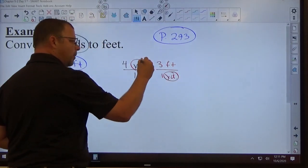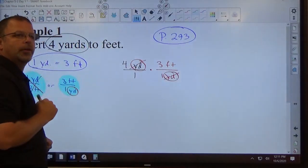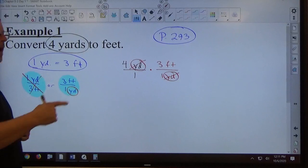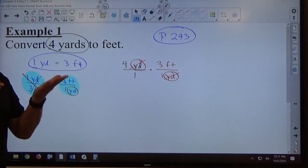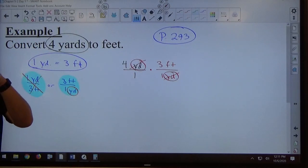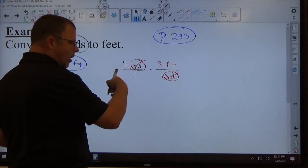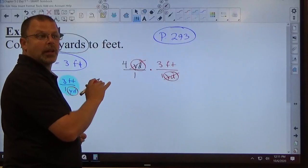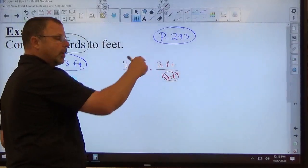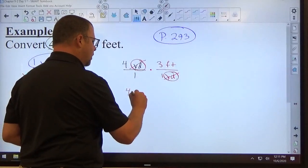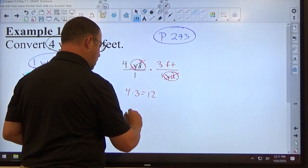The unit of yard on top and bottom cancel, leaving with the unit of feet, which is what I'm looking for. Then if the numbers end up in the same location, both on top, you multiply. If one's on top, one's on bottom, you use tops divided by bottom. In general, I've got a bunch of ones on the bottom. They don't do anything. So I've just got my non-one numbers on top. So four times three is equal to 12. So the answer is 12 feet.